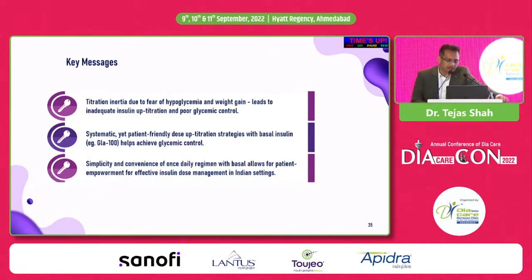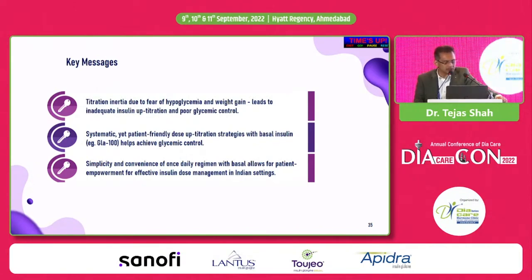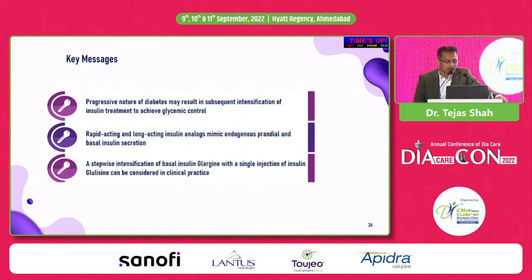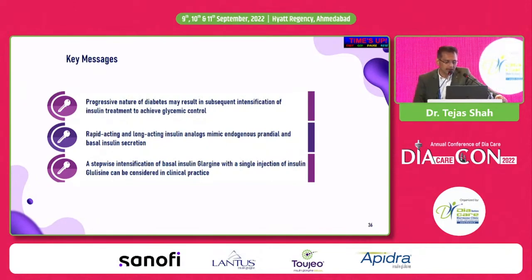To conclude — titration inertia exists due to fear of hypoglycemia and weight gain, leading to inadequate insulin up-titration and poor glycemic control. Patient-friendly dose up-titration strategies are needed combined with basal insulins to achieve the desired glycemic goal. Simplicity and convenience of once-daily basal regimens allows better patient empowerment for effective insulin dose management. The progressive nature of diabetes may result in subsequent intensification of insulin treatment. A rapid-acting and long-acting analog mimics endogenous postprandial insulin secretion and helps control postprandial surge and fasting blood sugar. Stepwise intensification with glargine plus a single injection of glulisine can be considered in clinical practice. Thank you very much.